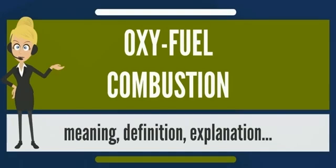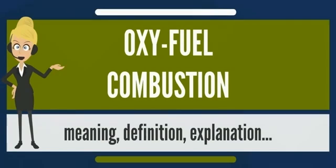The concentration of pollutants in the flue gas is higher, making separation easier. Most of the flue gases are condensable, which makes compression separation possible. Heat of condensation can be captured and reused rather than lost in the flue gas. Because nitrogen from air is absent, nitrogen oxide production is greatly reduced.